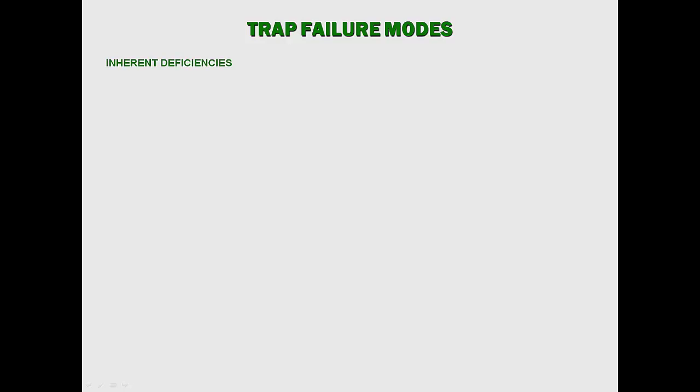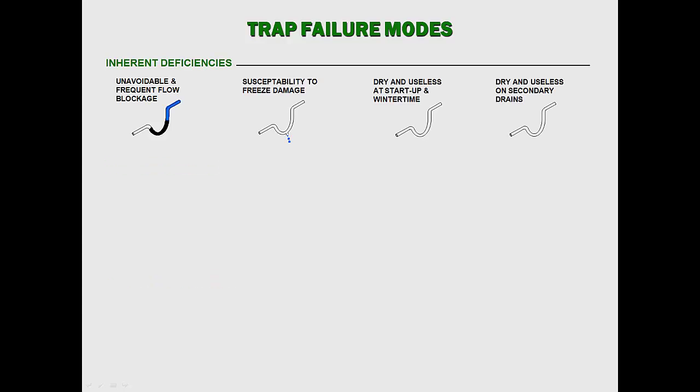The trap failure modes identified by ASHRAE can be divided into three categories: those due to inherent trap deficiencies, trap design deficiencies, and unwise field practices. Inherent trap deficiencies include unavoidable and frequent flow blockage, susceptibility to freeze damage, dry and useless at start-up and wintertime, and dry and useless on secondary drains. These deficiencies are common to any trap, regardless of the design.